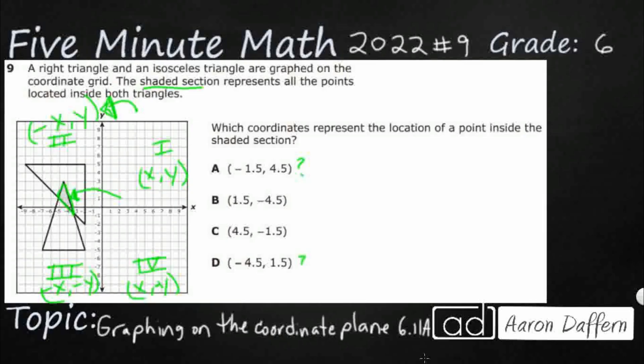And it could be this one, right? I mean, we'll go ahead and graph all of them just to make sure, but that's the only one that's in quadrant 2 that's got the negative x, positive y.